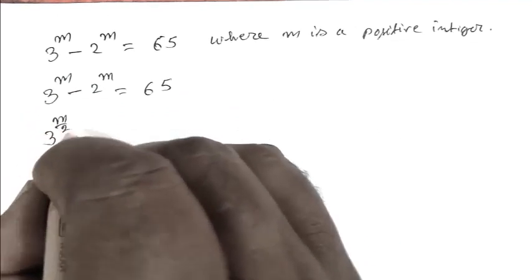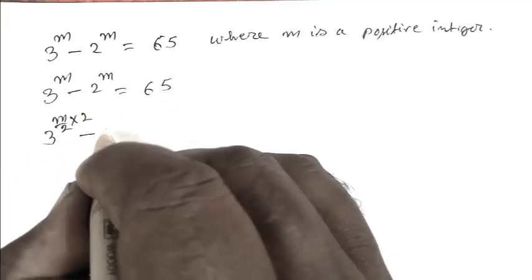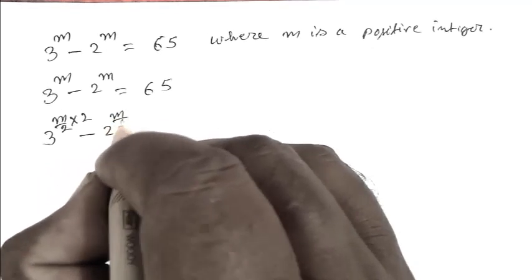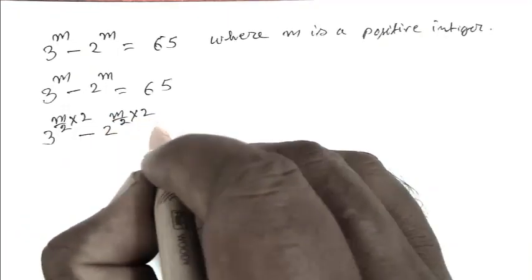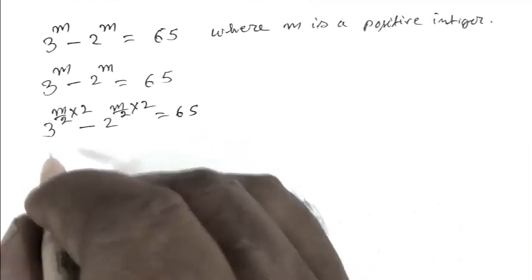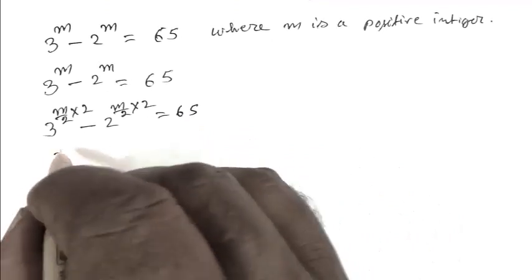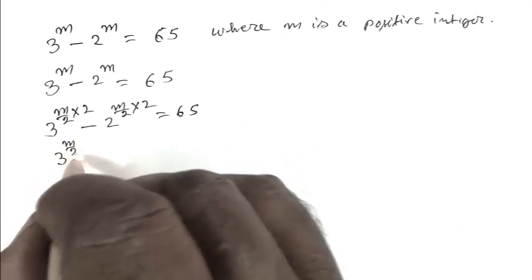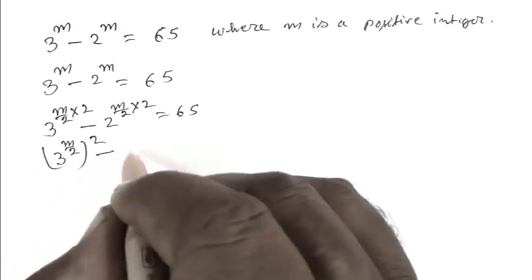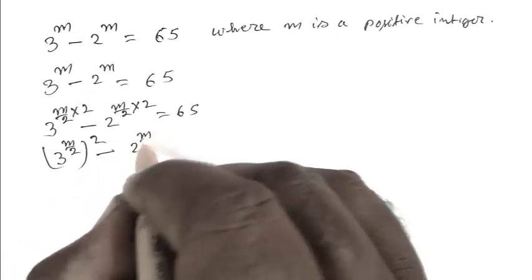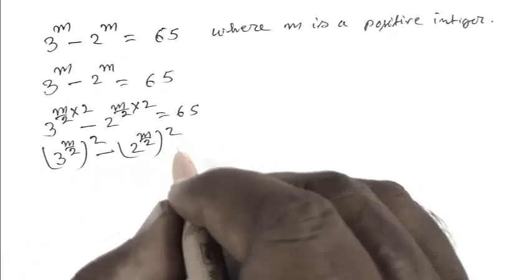Or we can write it 3 to the power m upon 2, multiplied by 2, minus 2 upon 2, multiplied by 2, equals 65. Or we can write that 3 to the power m upon 2, squared, minus 2 to the power m upon 2, squared, equals 65.